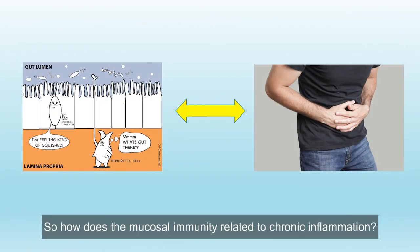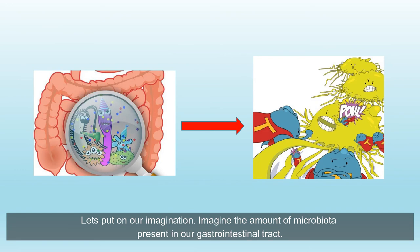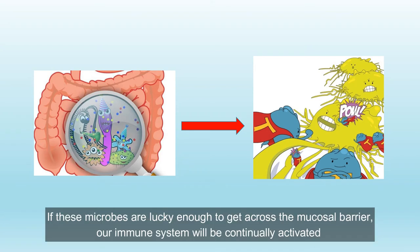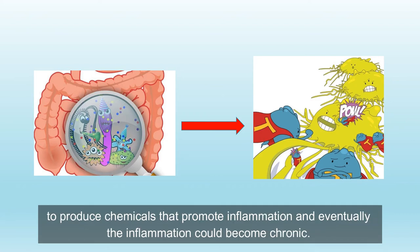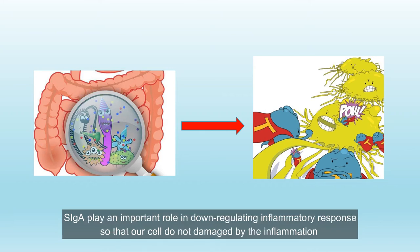So how does mucosal immunity relate to chronic inflammation? Imagine the amount of microbiota present in our gastrointestinal tract. If these microbes are lucky enough to get across the mucosal barrier, our immune system will be continually activated, producing chemicals that promote inflammation, and eventually the inflammation could become chronic. Secretory IgA, however, will keep those microbes separate from the inside of the body and prevent activation of the immune system, playing an important role in down-regulating the inflammatory response so that our cells are not damaged by inflammation.